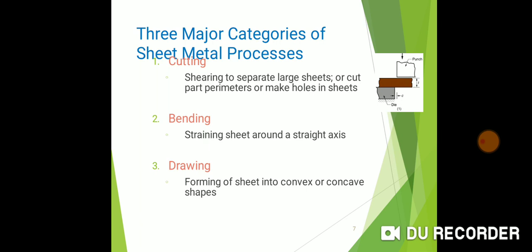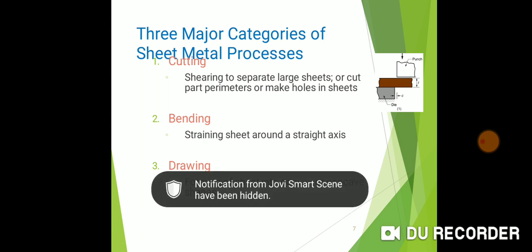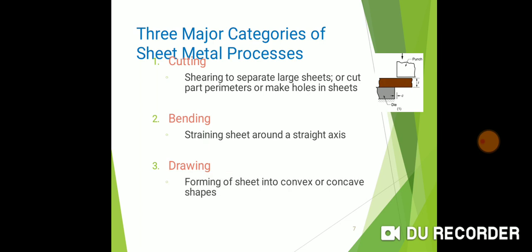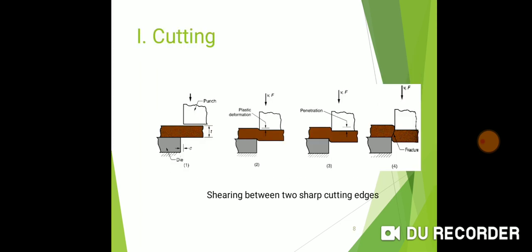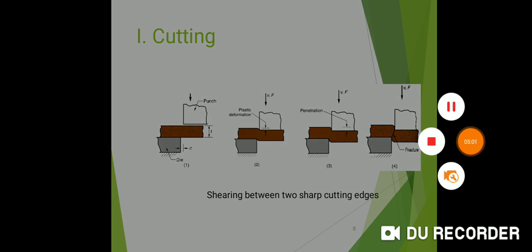Bending is the process at the end of the job where a straight sheet is bent around a straight axis. Drawing: this is the cutting process. First, force is applied. Second, plastic deformation occurs in the corner. Top side has compressive and tensile stress, and bottom side has compressive force. After this, penetration starts and then material fracture occurs. This is called the cutting process.